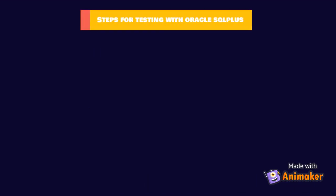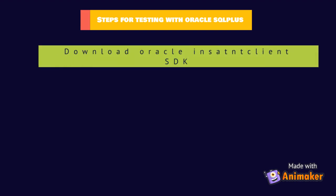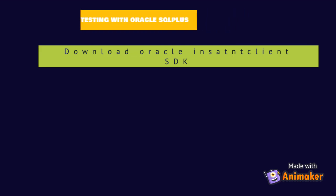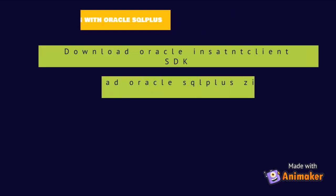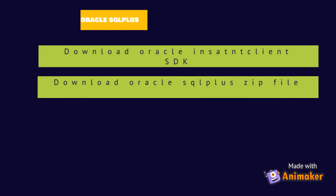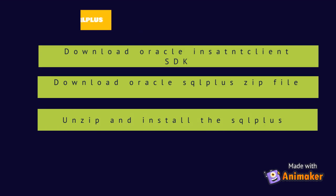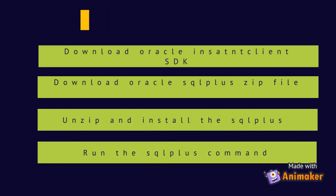Now let us look at the steps involved in installing and testing with Oracle SQL+. Step 1: Download and unzip the Oracle Instant Client SDK in the same directory as where we installed Oracle Instant Client. Step 2: Download the Oracle SQL+ RPM zip file. Step 3: Install the Oracle SQL+ RPM file using the Alien library. Finally, run the SQL+ command to see if Oracle Instant Client was installed correctly.